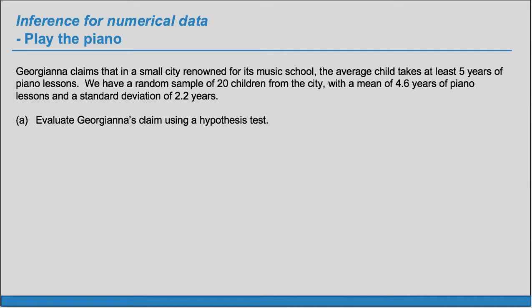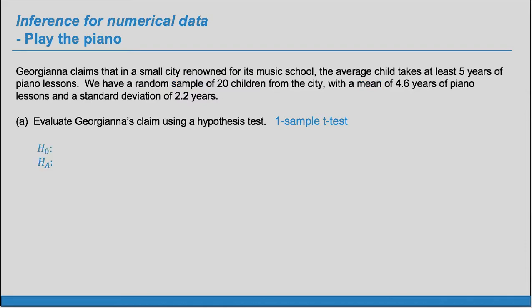First we must determine which test to use. Because we have a random sample and we're dealing with means as opposed to proportions, we'll use a one sample t-test. So we should set up our hypotheses — the null and alternate hypothesis.